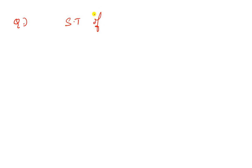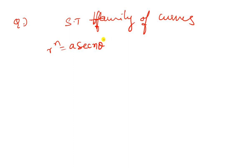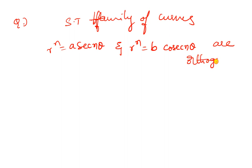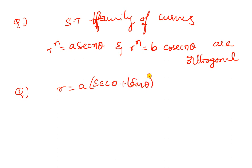Show that the family of curves R-power-N equals A secant N-theta and R-power-N equals B cosecant N-theta are orthogonal. This question appeared in 2017. One trick is to go through 5 to 10 years of previous question papers — these questions appear repeatedly. These are very important questions from orthogonal trajectories.